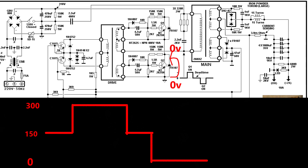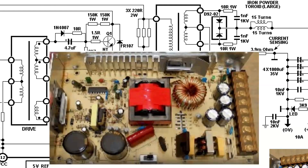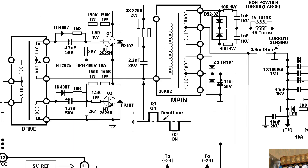This transistor is short for the collector emitter. We will see the voltage output. In this order, it will repeat the voltage output. Then the question is to start the power supply, which is a common Chinese power supply, which is 12 volts, 24 volts, which is a half bridge forward converter topology.